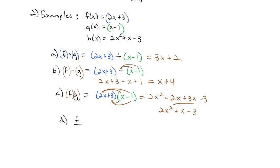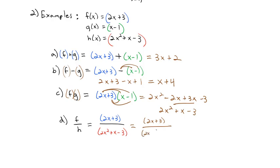Next, let's look at (f ÷ h)(x). This means we have the f function (2x + 3) divided by the h function, which is (2x² + x − 3). To simplify this rational expression, we factor the denominator, which factors to (2x + 3)(x − 1). Then we divide out the common factor of (2x + 3), leaving 1 over (x − 1).